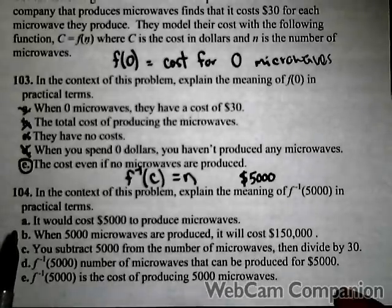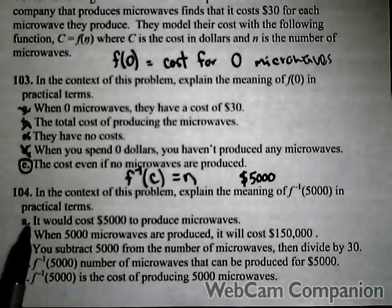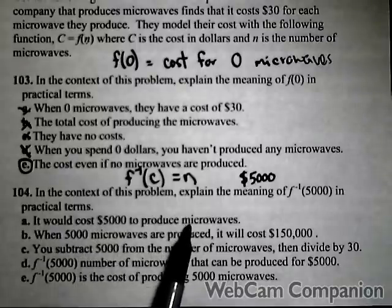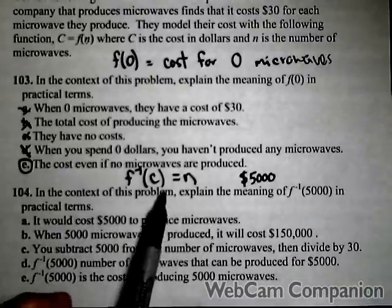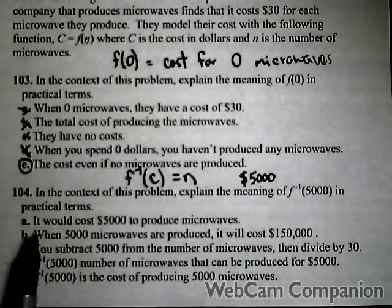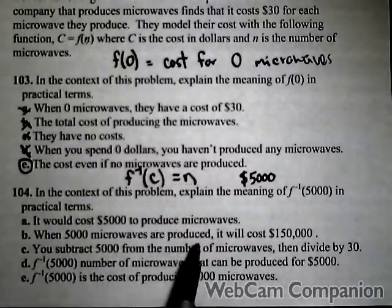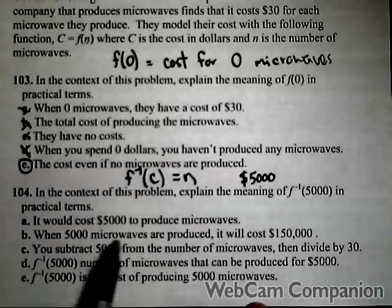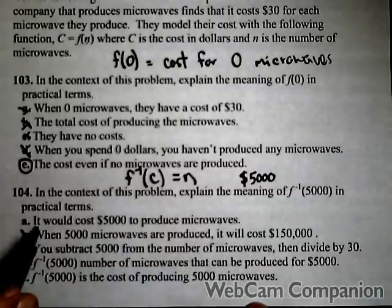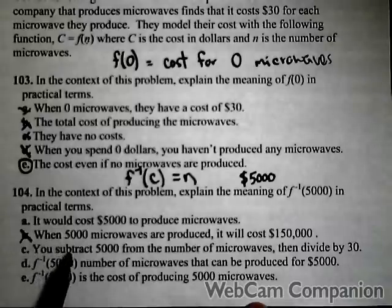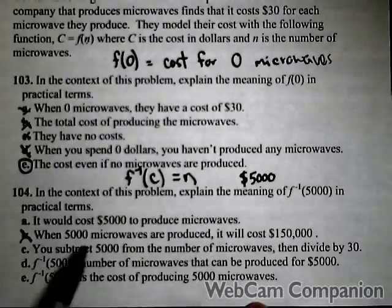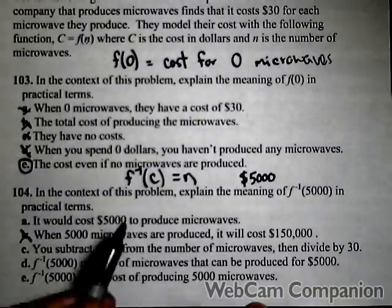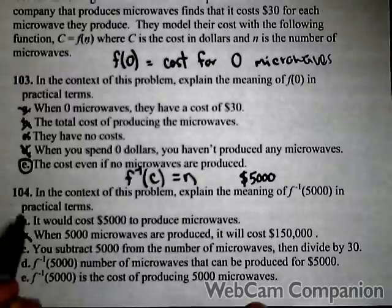Let's see what matches best. 'It would cost $5,000 to produce microwaves' - that doesn't match what this says. 'When 5000 microwaves are produced it will cost $150,000' - we just said the 5000 is dollars not microwaves, so eliminate that. 'You subtract 5000 from the number of microwaves, then divide by 30' - we already said 5000 is dollars, not number of microwaves.